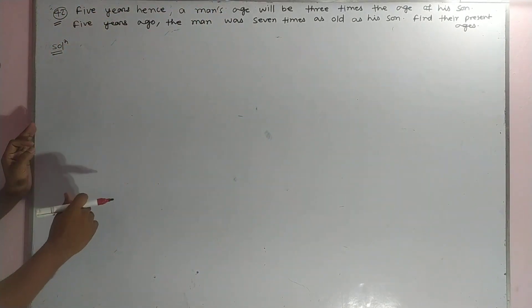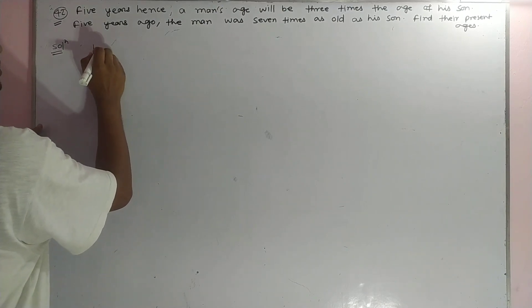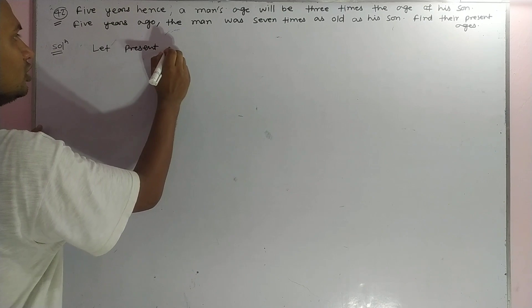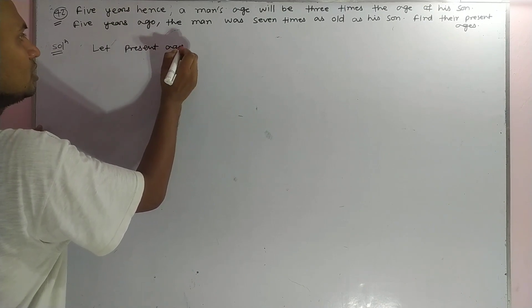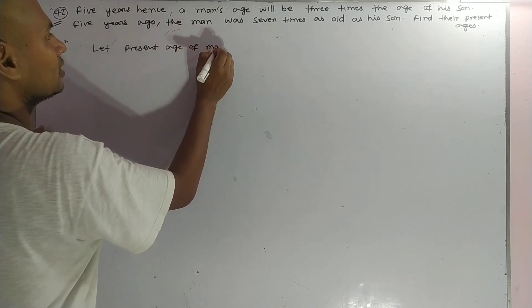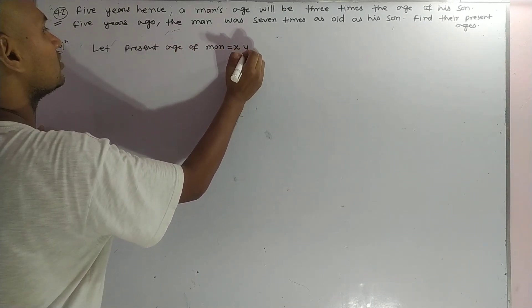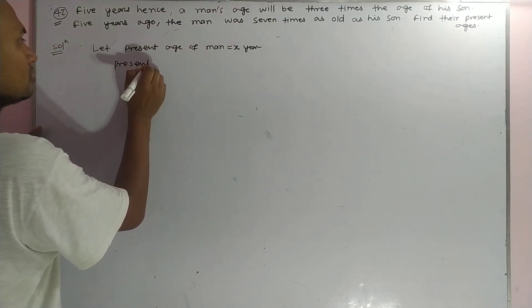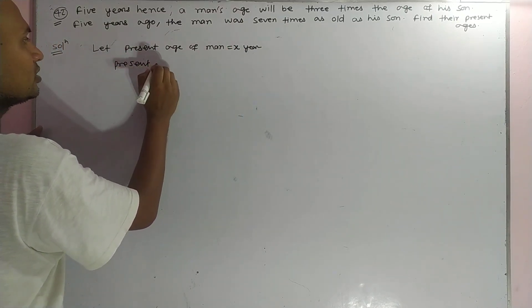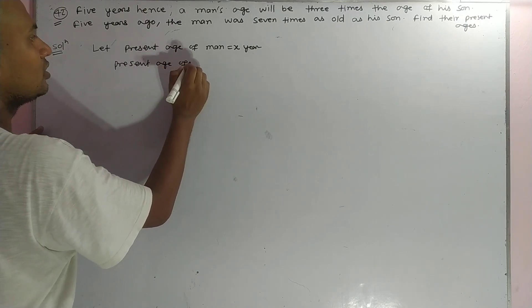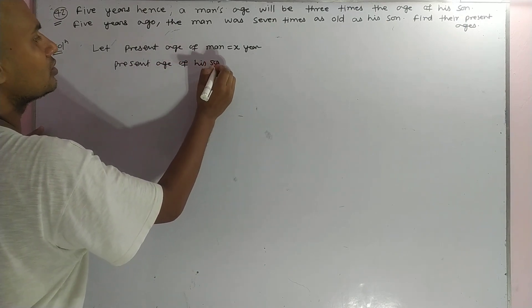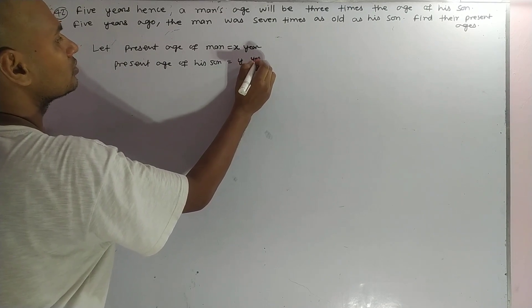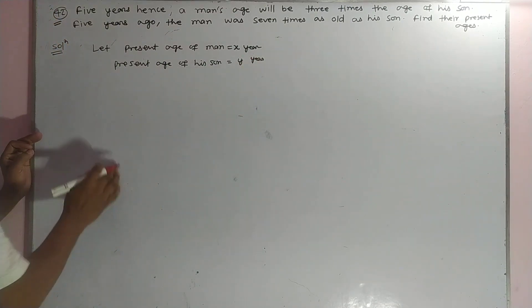Let us assume the present age of the man is equal to x years, and the present age of his son is equal to y years.